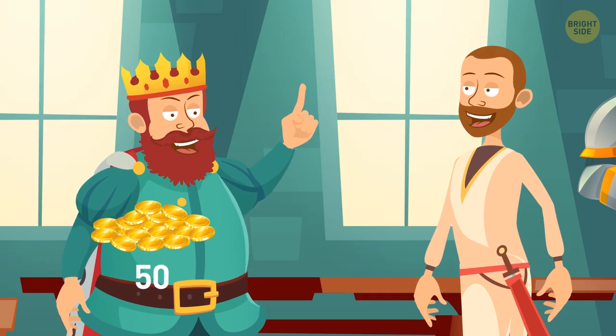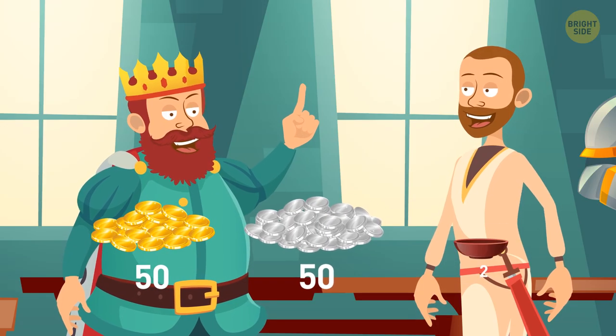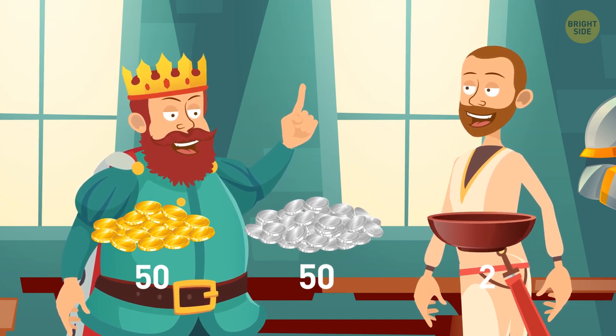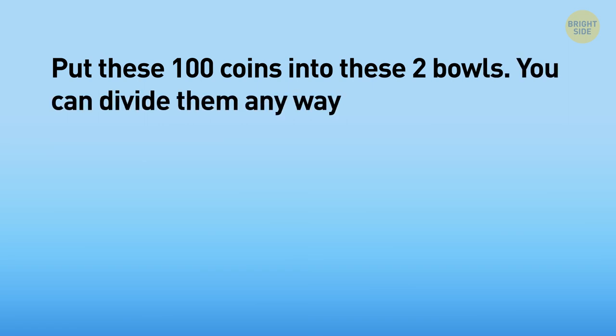He gave the guy 50 gold coins, 50 silver coins, and two empty bowls. Then the king said, put these 100 coins into these two bowls. You can divide them any way you like, as long as you use all the coins.